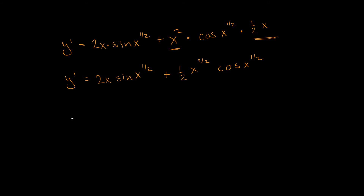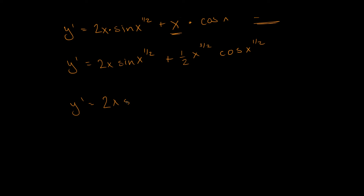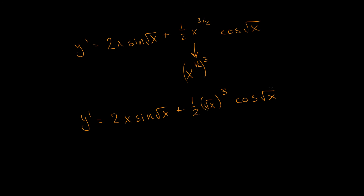If you wanted to, you could rewrite this. Since the one-half power is equivalent to square root, you could write this as 2x sine of the square root of x, plus one-half x to the three-halves cosine of the square root of x. And x to the three-halves can be broken apart as the square root of x, cubed. So y' equals 2x sine of root x, plus one-half root x cubed, cosine of root x. Any of these forms could be your answer.